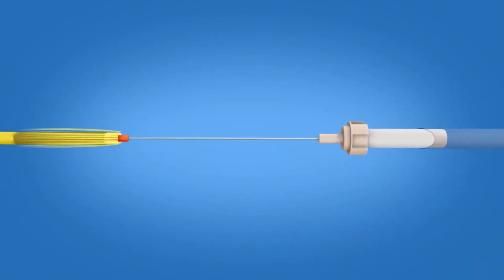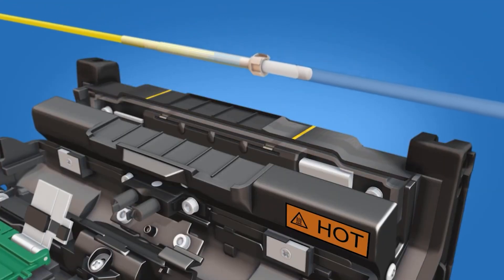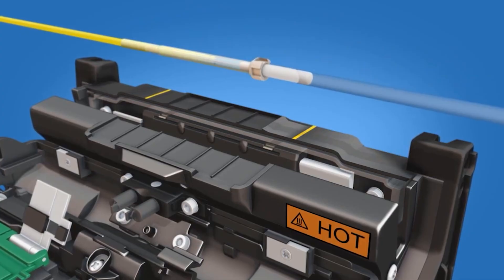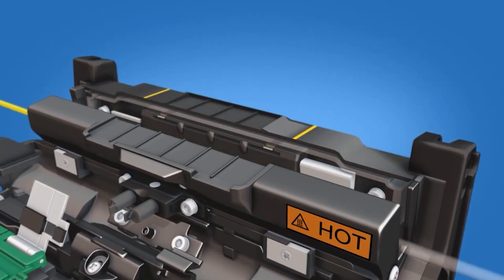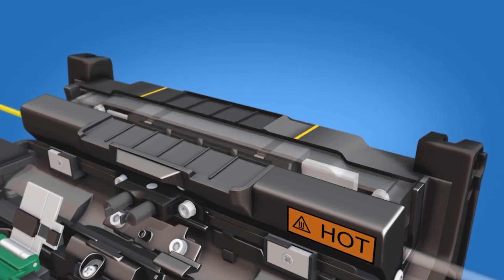Slide the protective sleeve over the splice so that it is flush with the ferrule unit. Position the sleeve in the center of the heater while continuing to maintain contact with the ferrule. Heat the protective sleeve. Allow the sleeve to cool before removing it from the heater.